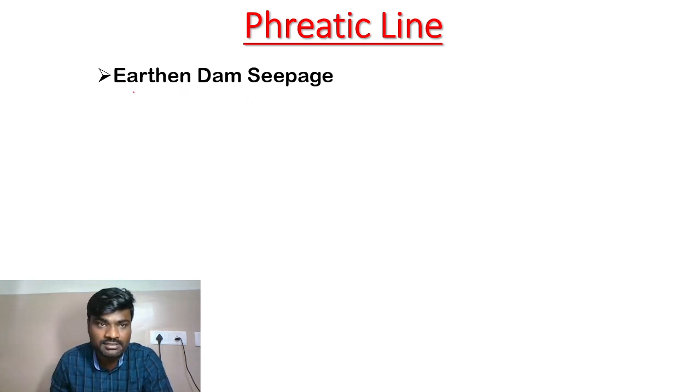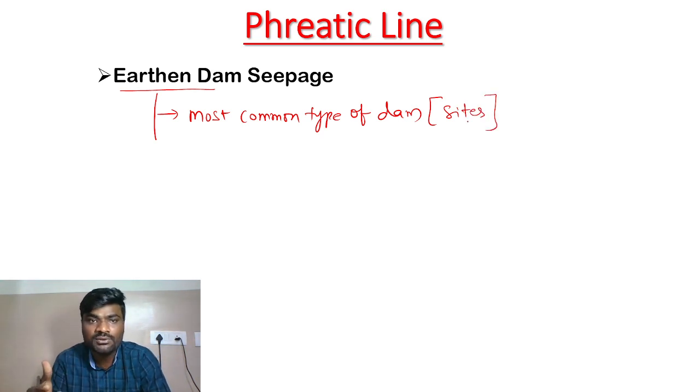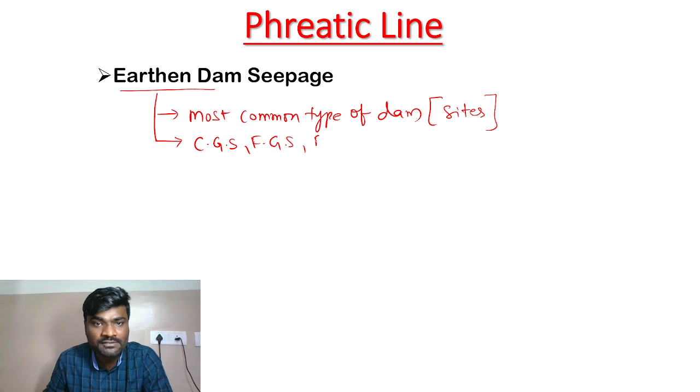We know that earth dam is the most common type of dam. This dam is suitable for various types of sites where we have first preference. Earth dams can be constructed using coarse grain soil, fine grain soil, and some types of rocks.